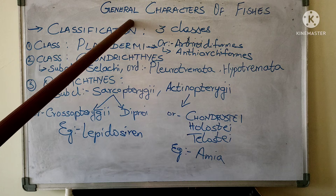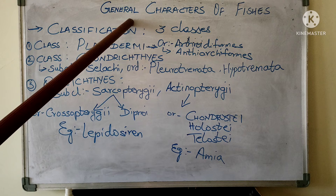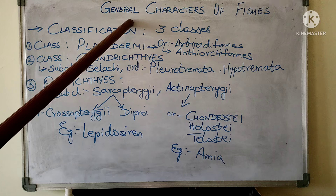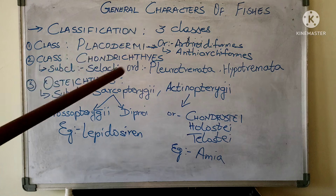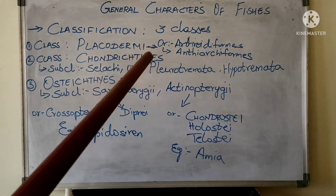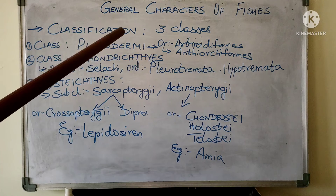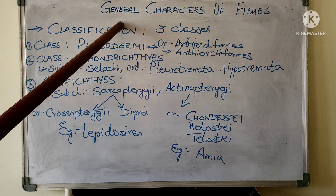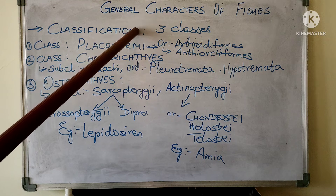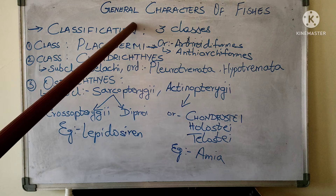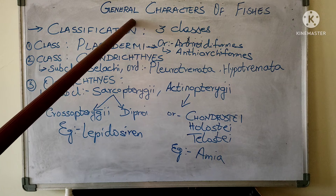Fins are supported by fin rays. The exoskeleton of fishes is made up of scales, denticles, or some bony plate-like structures. The exoskeleton is hard to give them protection and the endoskeleton is bony. Muscles are arranged into different segments. The alimentary canal has a definite stomach, intestine and rectum, ending with the anus.